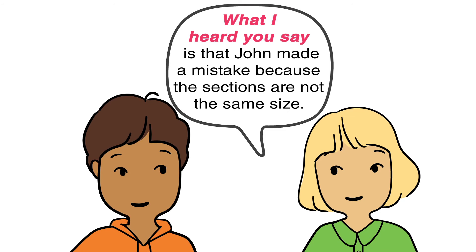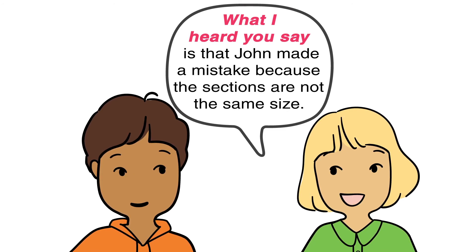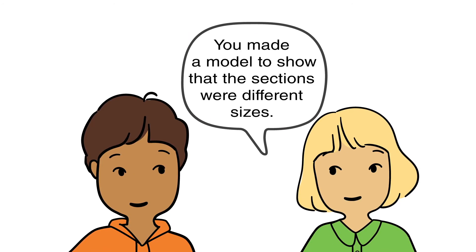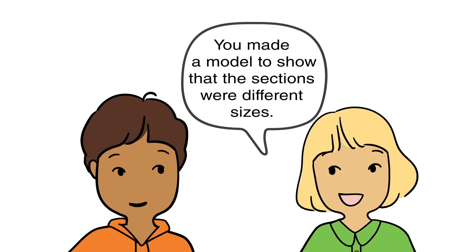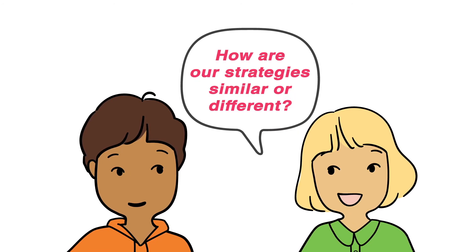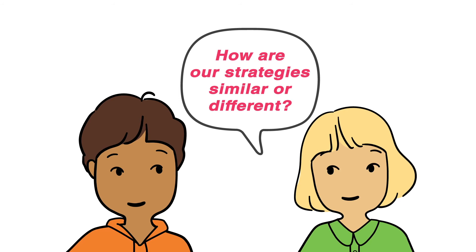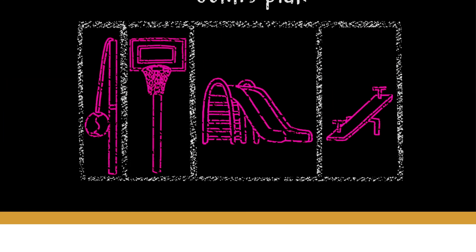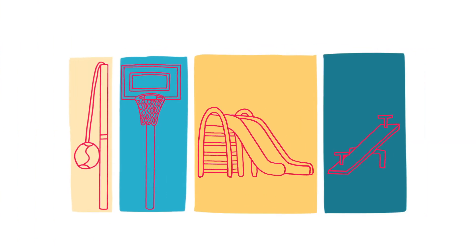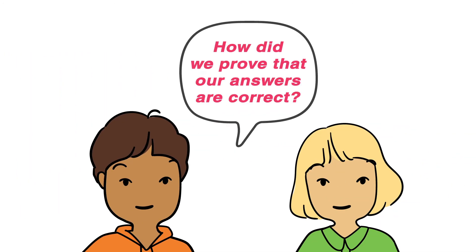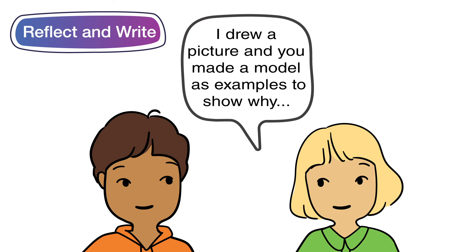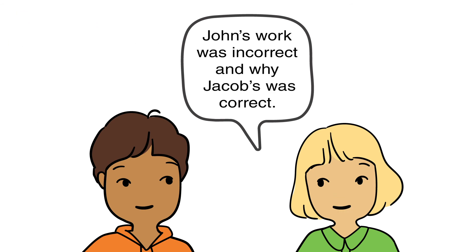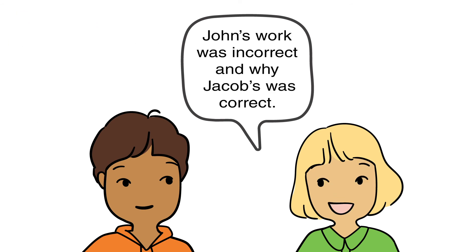What I heard you say is that John made a mistake because the sections are not the same size. You made a model to show that the sections were different sizes. How are our strategies similar or different? We both looked at their work and tried to find equal sections. You drew a picture to support your reasoning and I made a model. I drew a picture and you made a model as examples to show why John's work was incorrect and why Jacob's was correct.